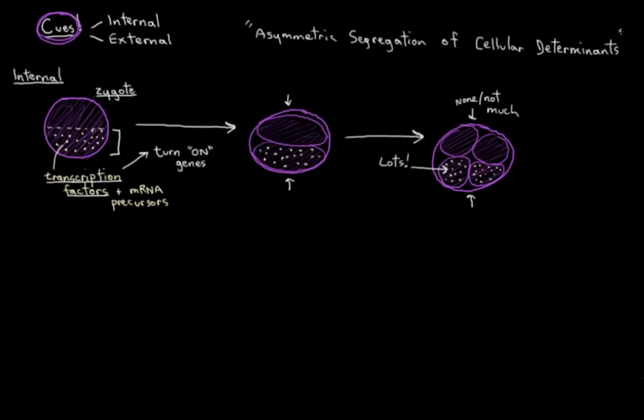It's this big mouthful here, but if we break it down here you can see asymmetric because it really just refers to how these transcription factors are not symmetrically distributed among the daughter cells here. And this cellular determinants bit is just referring to the transcription factors or their precursors.